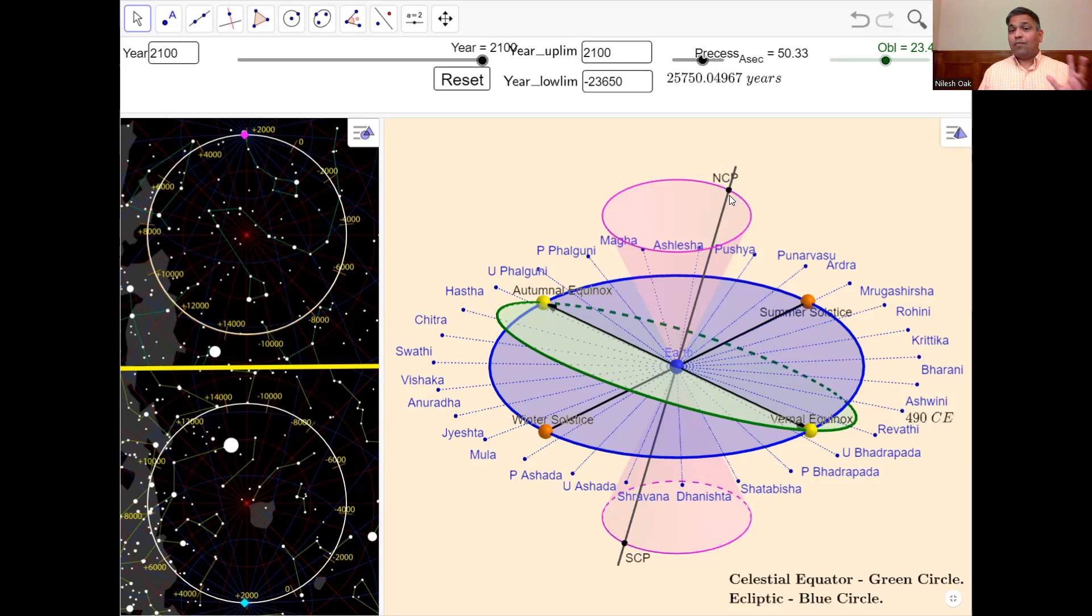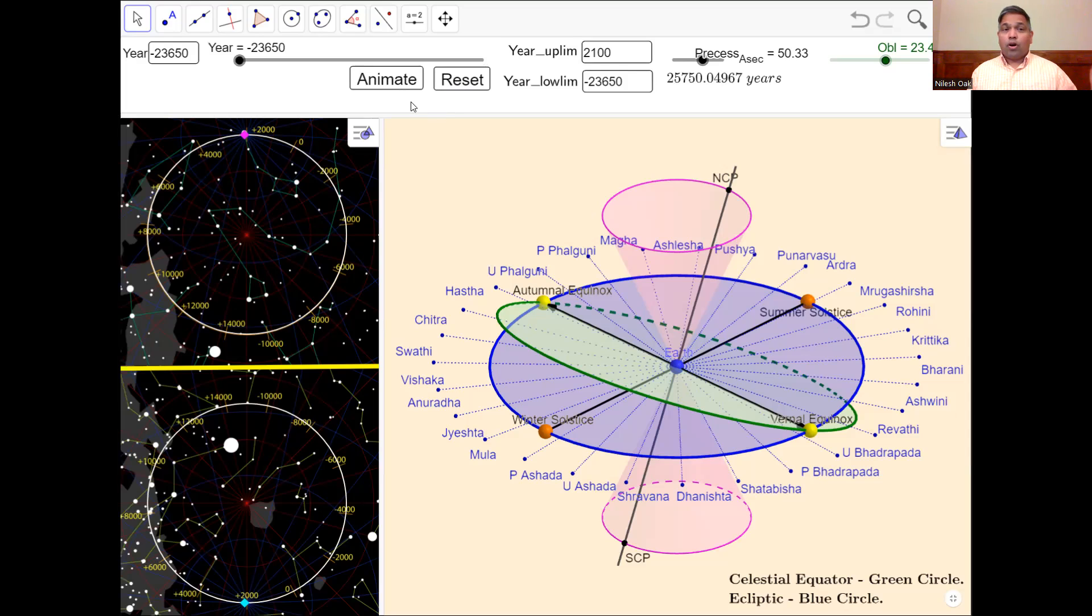Now remember, it takes 26,000 years to make one complete cycle. So if we go back in the past by 26,000 years, it will bring us to the exactly same position. And guess what, in fact, that's the exact position I'm showing it to you. So now I will walk you through a quick fast journey of 26,000 years.